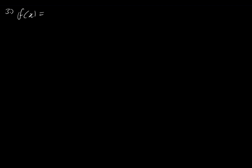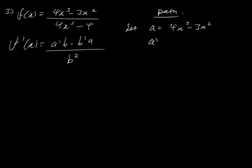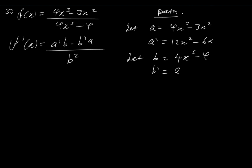Let's look at example number 3. Say you have f of x equal to 4x cubed minus 3x squared, over 4x to the 5th minus 4. The derivative f prime of x is equal to a prime b minus b prime a over b squared. Let a be equal to what's on top, which is 4x cubed minus 3x squared. Then a prime equals 12x squared minus 6x. Let b equal to what's at the bottom, which is 4x to the 5th minus 4. Then b prime is equal to 20x to the 4th.